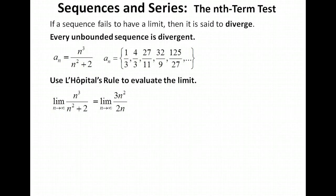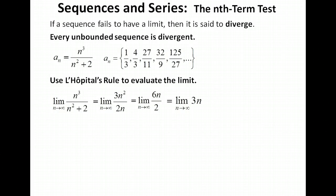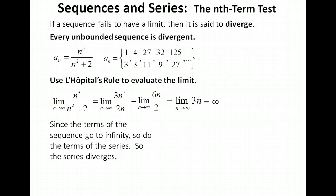That gives us the limit as n goes to infinity of 3n² over 2n. Since it's still not fully simplified, let's take the derivatives again and get 6n over 2, which simplifies to 3n. As n goes to infinity, 3n goes to infinity as well. So this sequence is diverging — going off to infinity. Since the terms of the sequence go to infinity, so must the terms of the series. So the series must diverge.